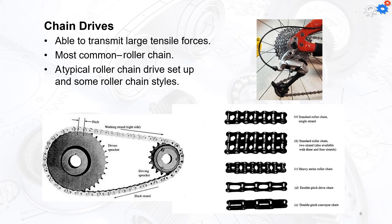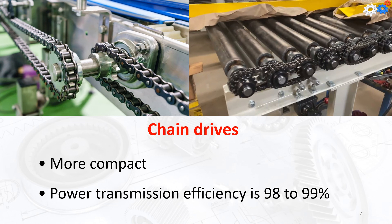In summary, chain drives are able to transmit large tensile forces. The most common type is a roller chain. Chain drives can connect two parallel shafts, similar to gears, and are suitable for very long and short distances. They are compact, and power transmission efficiency is 98 to 99 percent.